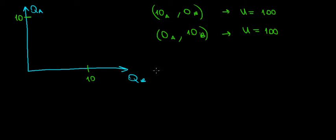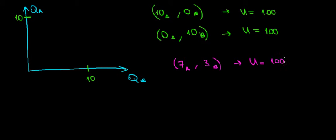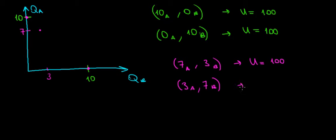Let's give some more examples. What if we have seven kilos of apples and three kilos of bananas? Let's say that also gives us a utility level of 100 units. Let's put it on the graph — seven and three would be somewhere here. This was one extreme point, this was the other. Now what if we have the opposite: three kilos of apples and seven kilos of bananas for the same utility level?